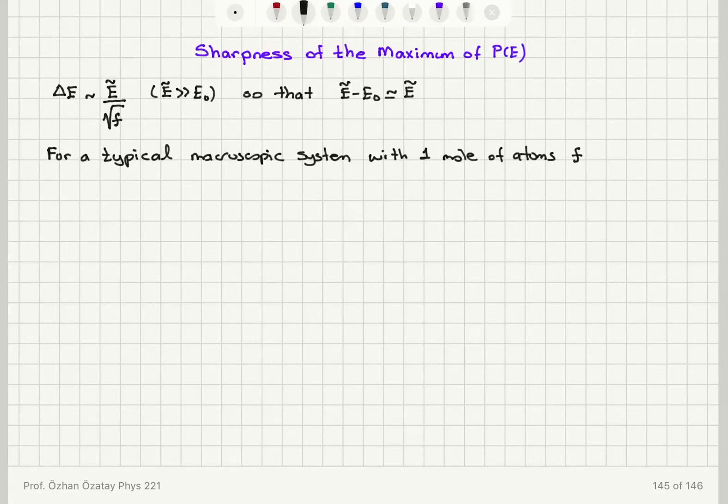Remember, for each atom we have to specify Nx, Ny, and Nz. So Avogadro's number is 10 to 23, so multiplied by 6 times 10 to 23, we will get something of the order of 10 to 24 for the number of degrees of freedom.